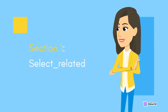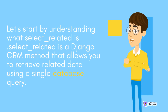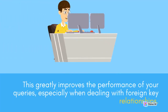Section 1: select_related. Let's start by understanding what select_related is. select_related is a Django ORM method that allows you to retrieve related data using a single database query. It works by performing a join operation between the primary table and the related table, minimizing the number of database hits required. This greatly improves the performance of your queries, especially when dealing with foreign key relationships.